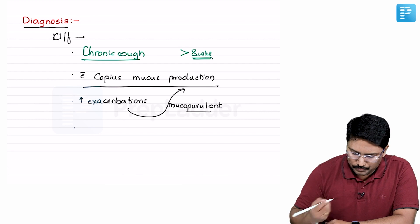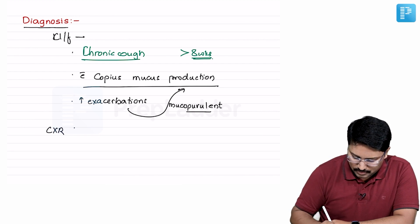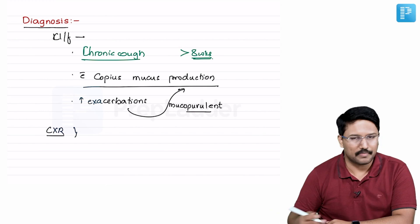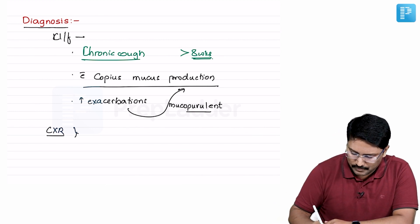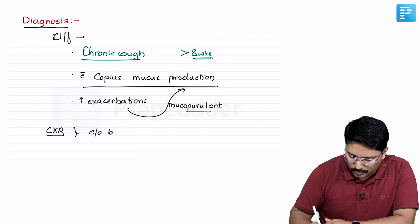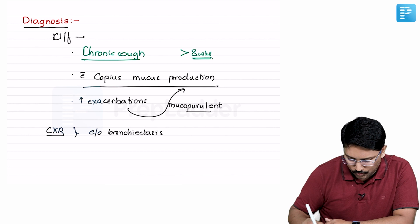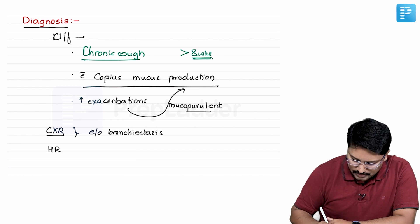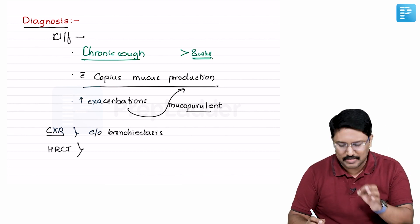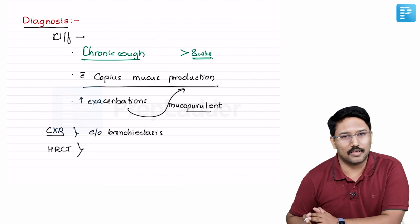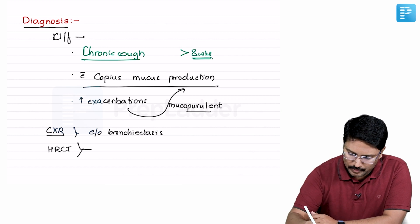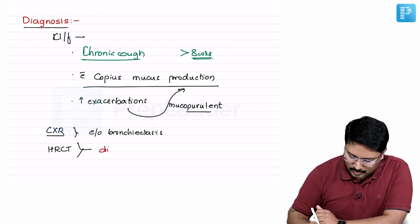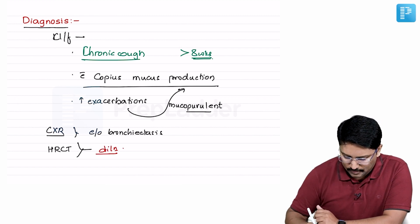When you see such a patient you start with evaluation using a chest x-ray. You might have done the PFT where you would have already got an obstructive picture, but you do a chest x-ray. You might have evidence of bronchiectasis, but the better investigation would be doing the HRCT because the CT will help you precisely locate the segments of the lungs where the bronchiectatic changes are present. On the HRCT you will be able to see those dilated abnormal bronchi.